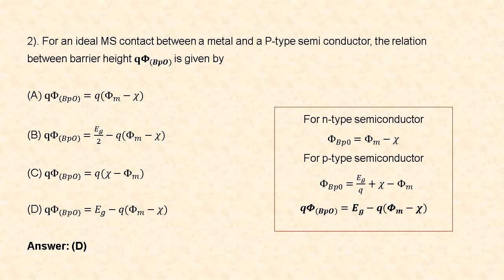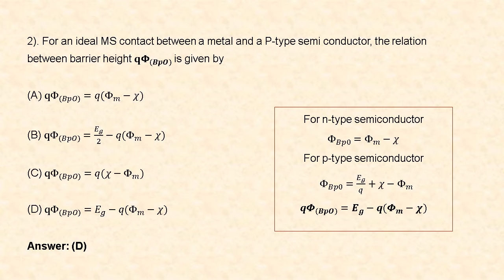Next question: for an ideal MS contact, that is metal-semiconductor contact, between a metal and a P-type semiconductor, the relation for barrier height φ_BP0 is given by: for N-type, the barrier height is φ_B0 = φ_M − χ, where φ_M is the work function of the metal. For P-type, φ_BP0 = E_g/q + χ − φ_M. Multiplying the entire equation by q and rearranging, q·φ_BP0 = E_g − q(φ_M − χ). So option D is correct.